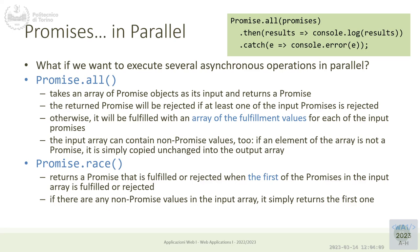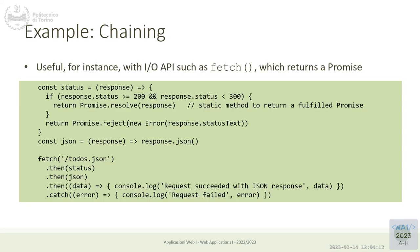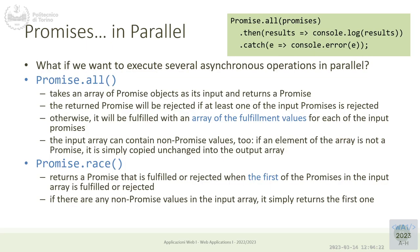Beyond sequential chaining, there are other ways to combine promises. Using a chain of `.then()` calls enforces sequential execution. But sometimes you have many independent promises and want to run all of them in parallel. You can create them in an array and each will have its own `.then()` callback, but you might need to know when all of them have finished before processing the combined results.